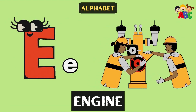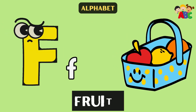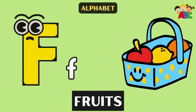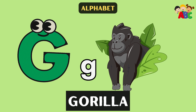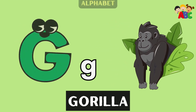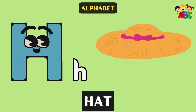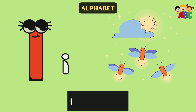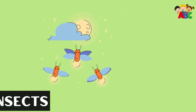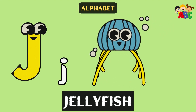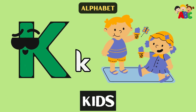E for Engine. F for Fruits. G for Gorilla. H for Head. I for Insects. J for Jelly Kids. K for Kids.